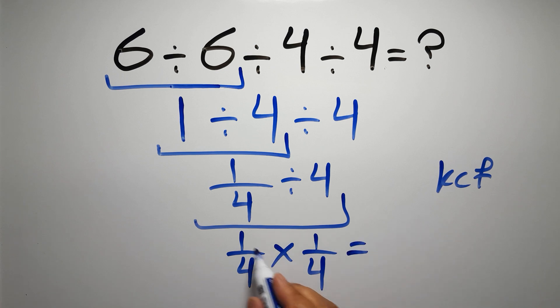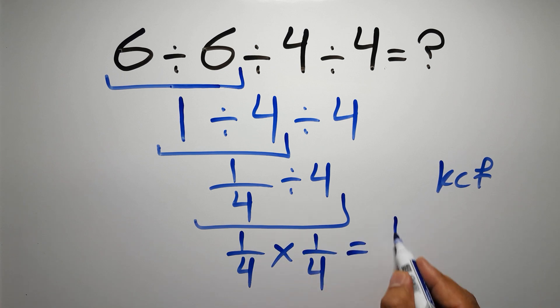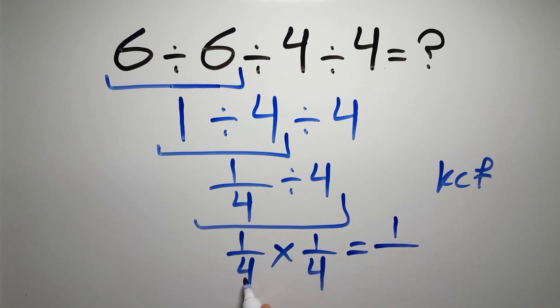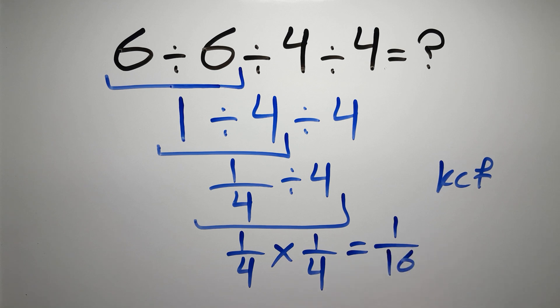Which equals: 1 times 1 gives us 1, so 1 over 4 times 4, which equals 16, so 1 over 16. And this is our final answer to this problem.